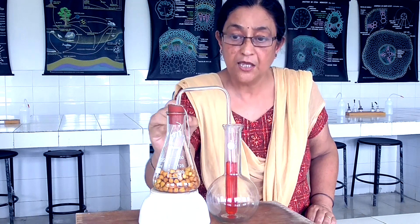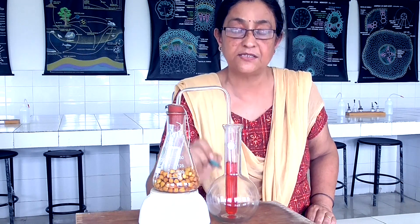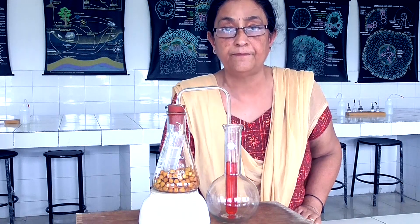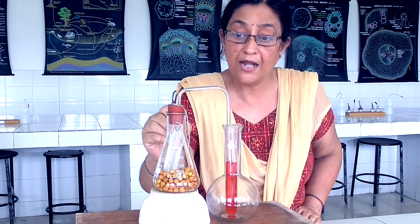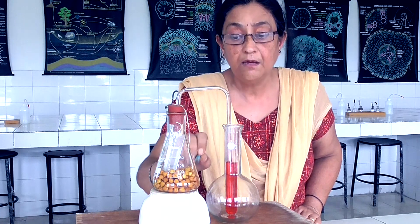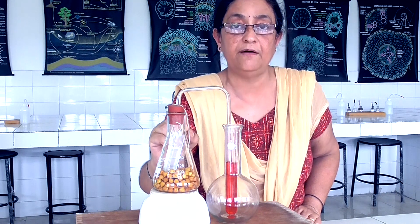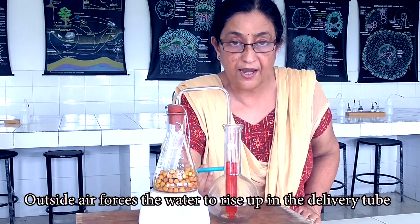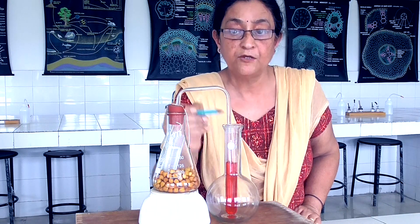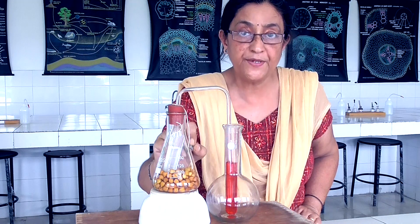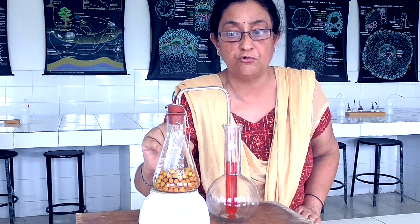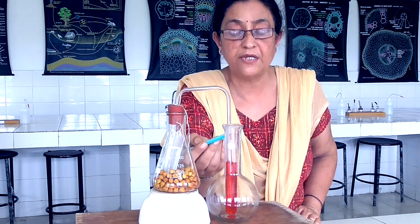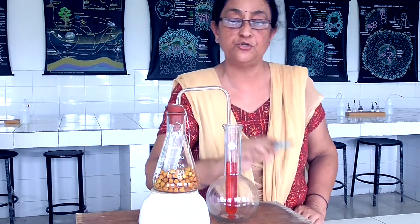The conclusion is this: you are using potassium hydroxide solution in the conical flask, and this potassium hydroxide actually absorbs the carbon dioxide which is released during respiration. As the carbon dioxide is absorbed and the oxygen present in the conical flask is being used by the seeds, a little vacuum is created in the conical flask. Due to this vacuum, a suction pull is created, and that is why the water level in the delivery tube rises up — proving that carbon dioxide is released during respiration, absorbed by the potassium hydroxide solution.